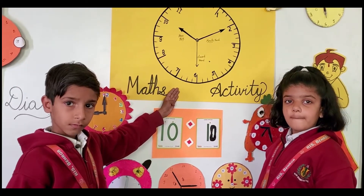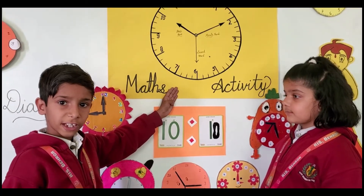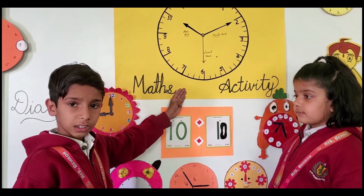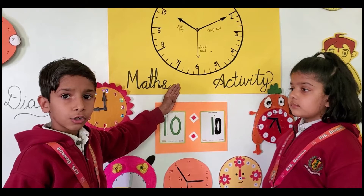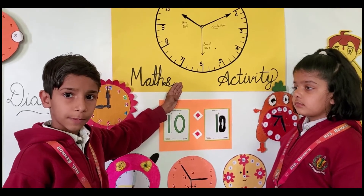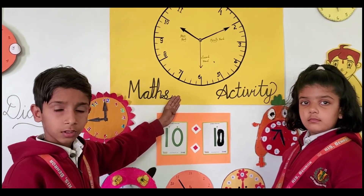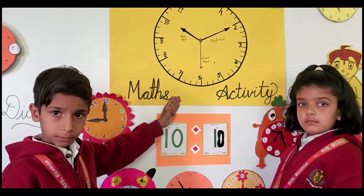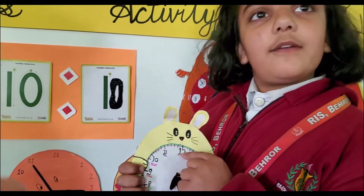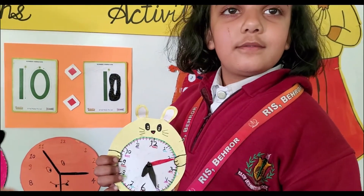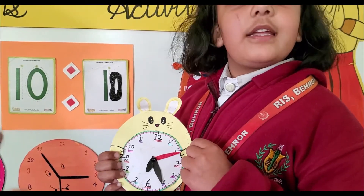Manu, tell me about the clock face. The clock face is divided into 12 equal parts. And each part has five divisions.